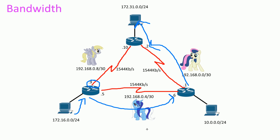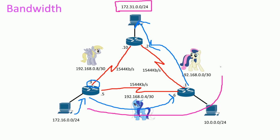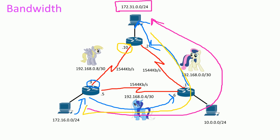We now have four hops. Since we set this interface to one kilobit, the router knows the best path to the remote network is to go all the way around. And once it gets there, the router knows the best return path too — this interface is one kilobit while 1544 is faster, so it comes back that way to the client.